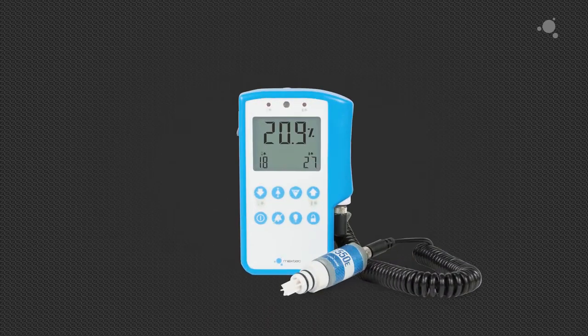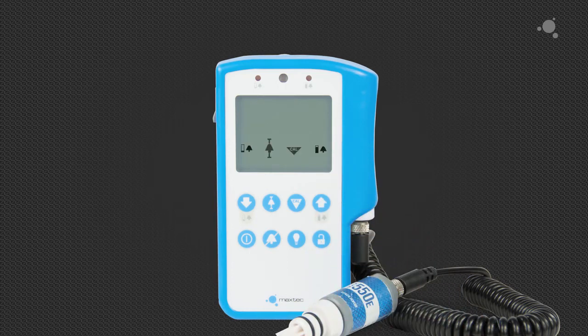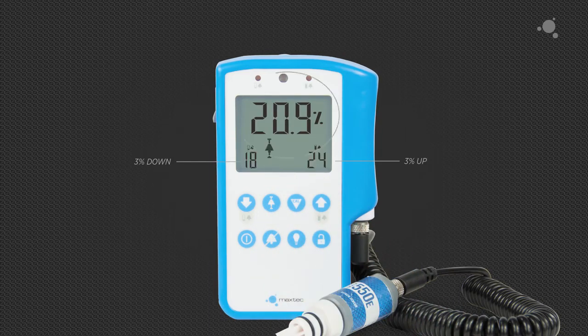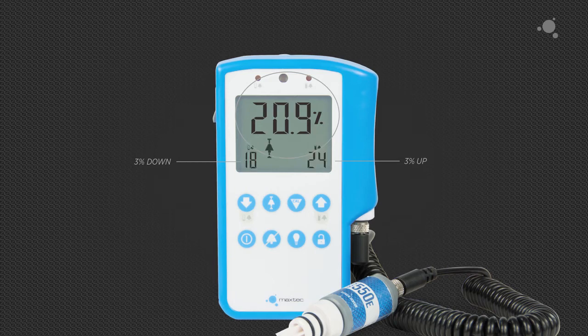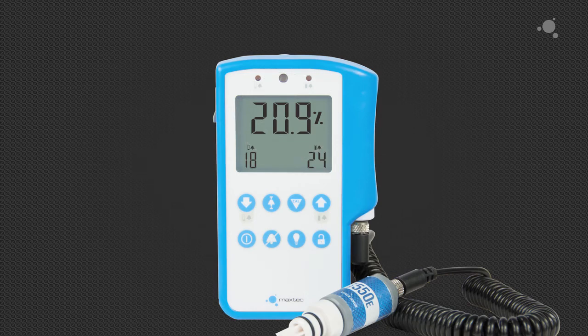The smart alarms can easily be set with the push of a couple buttons. First, press the lock button to access the menu screen. Next, press the smart alarm button. You will notice that the monitor will automatically set the alarm guardrails 3% down and 3% up from the current reading on the monitor screen. Pressing the lock button again will set the alarms.